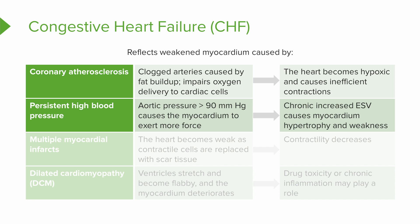Another factor that can lead to this weakened myocardium and thus to congestive heart failure is persistent high blood pressure. If your aortic pressure is always greater than about 90 millimeters of mercury, this can cause the myocardium to exert more force. And if this is chronic, this increases your end systolic volume and causes the myocardium to hypertrophy, or get bigger — but it's getting bigger while also getting weaker, so this is not a good thing.